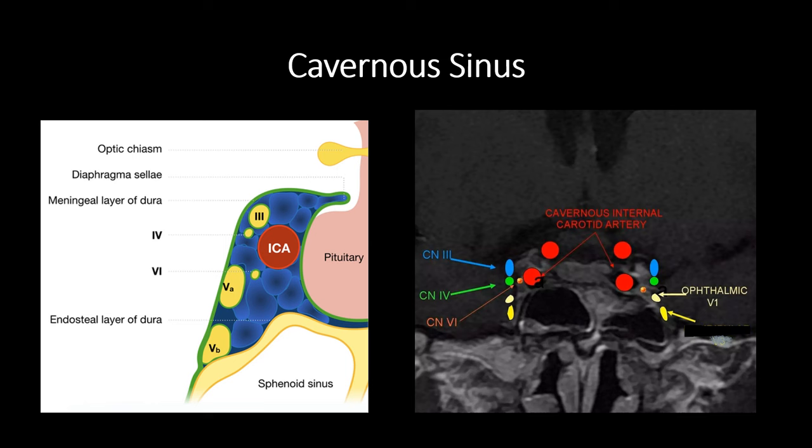Here is an image showing the cavernous sinus, which is located on either side of the pituitary fossa and the body of the sphenoid. The contents within the cavernous sinus are the internal carotid artery and the sixth cranial nerve. The structures in the lateral wall include the third nerve, fourth nerve, and the ophthalmic and maxillary divisions of the fifth nerve.